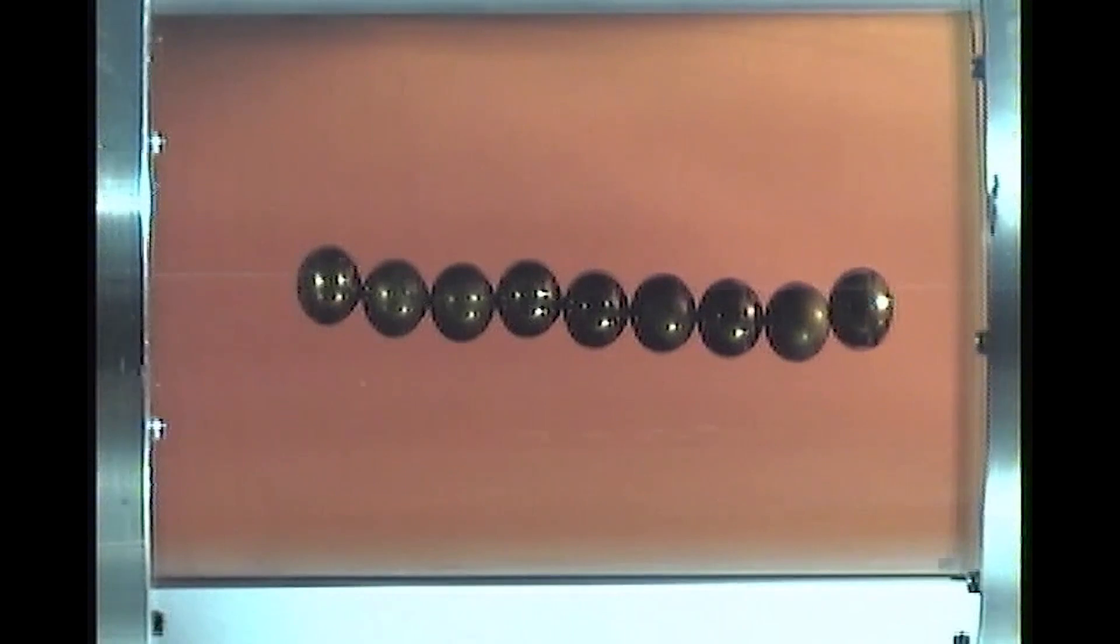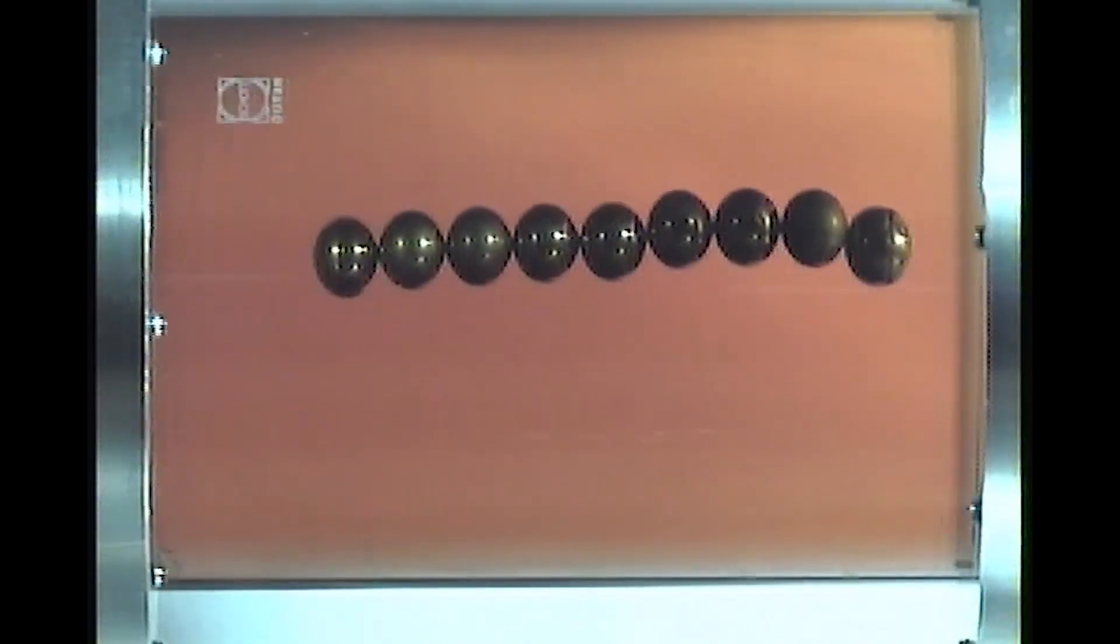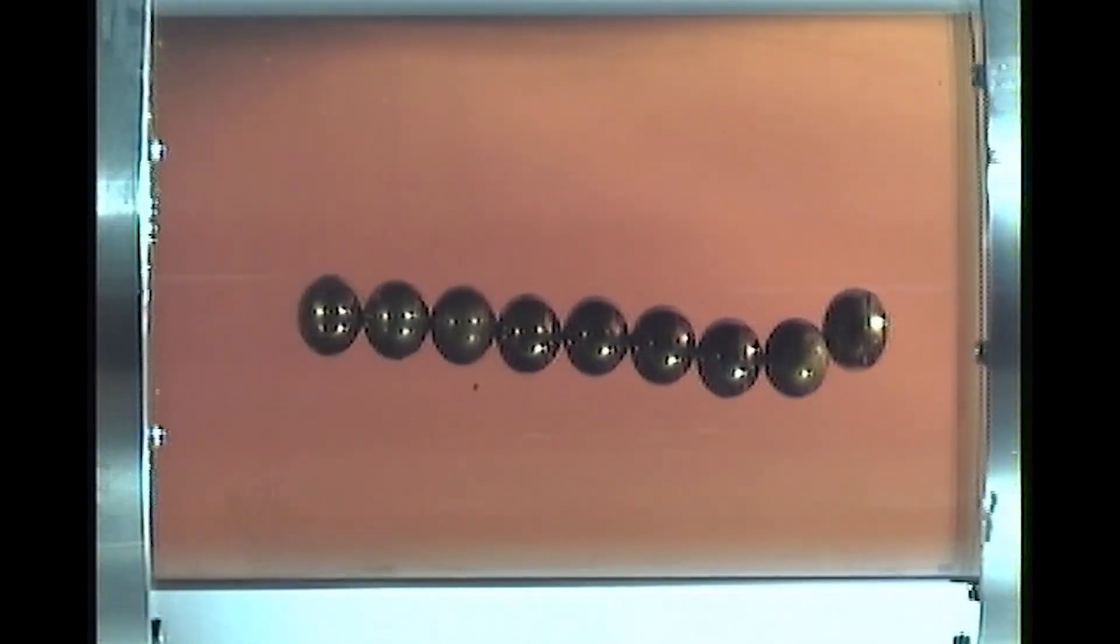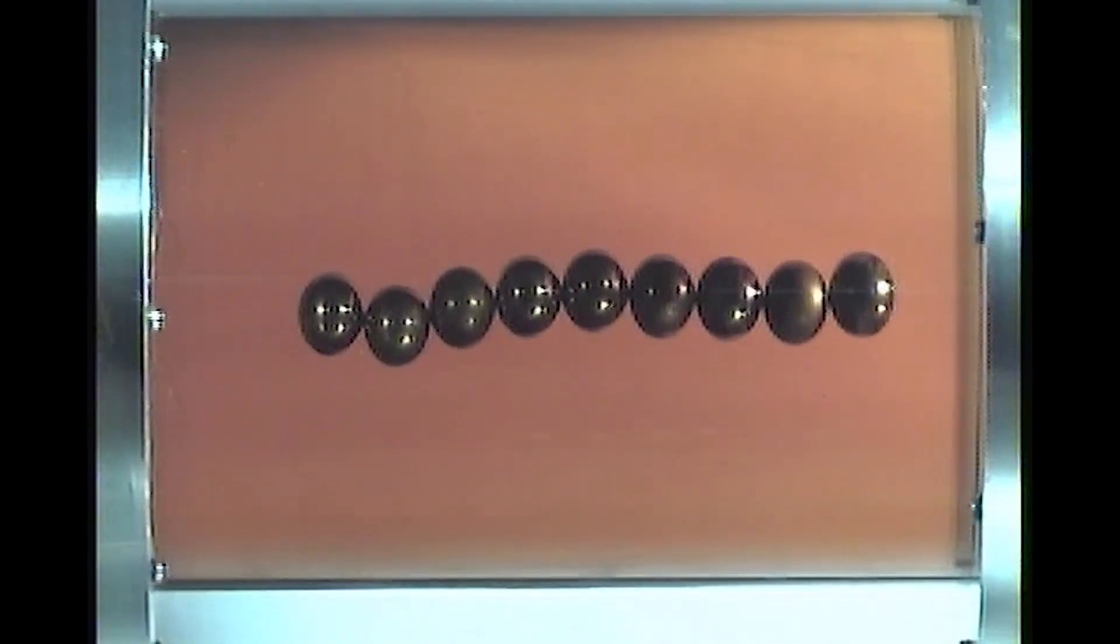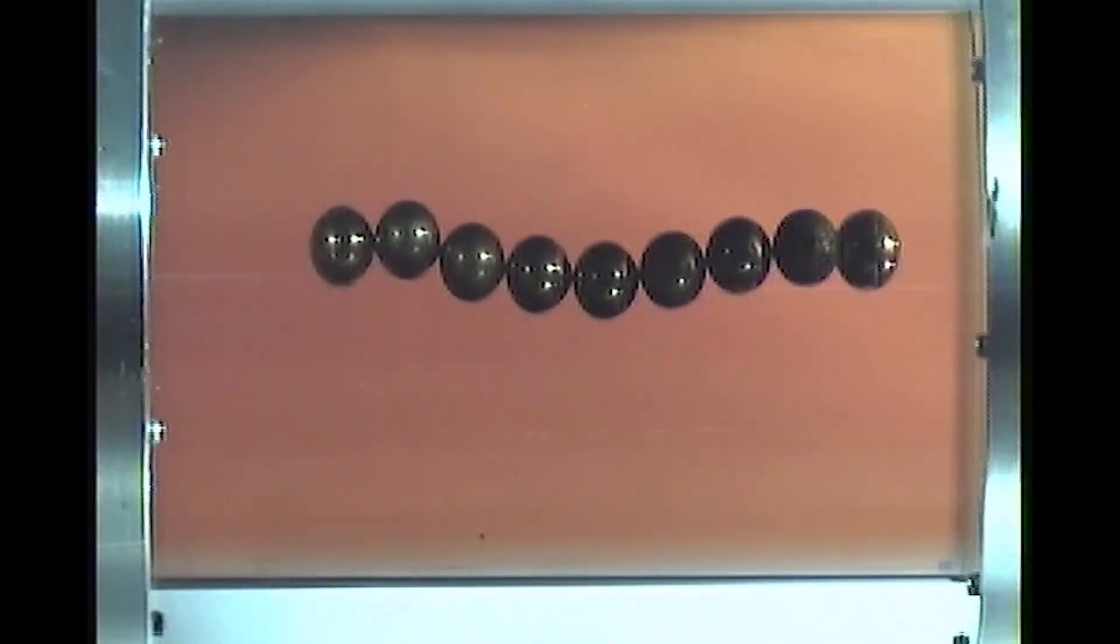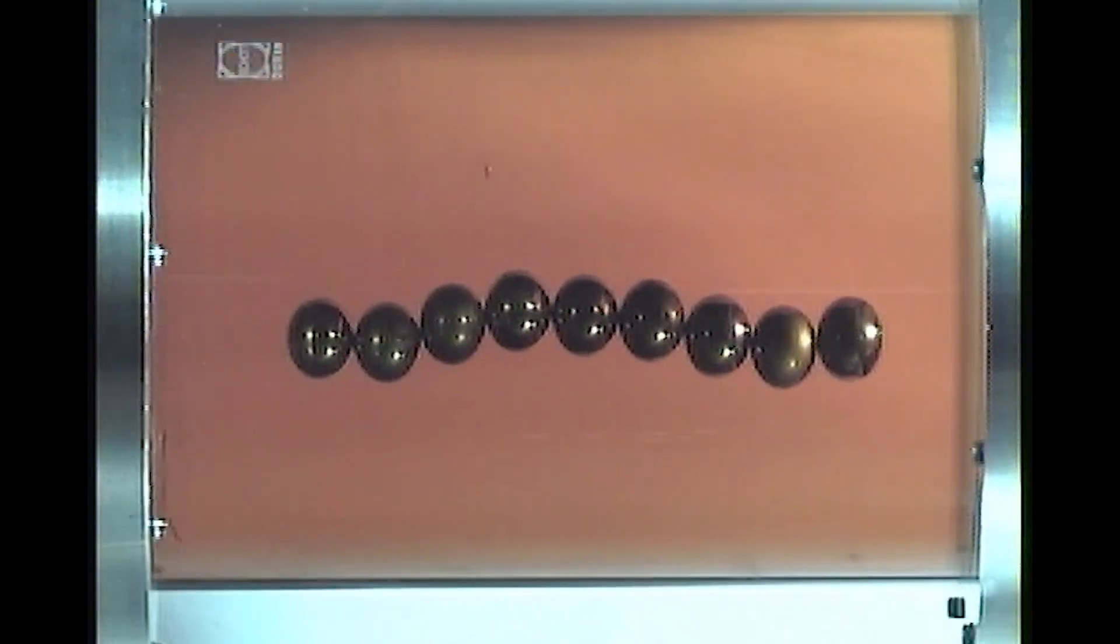But it's still a perfectly periodic motion. If you were to analyze this you would see that the motion of all the balls is just perfectly periodic. Now you can see a second wave appearing along the length of the line of balls.